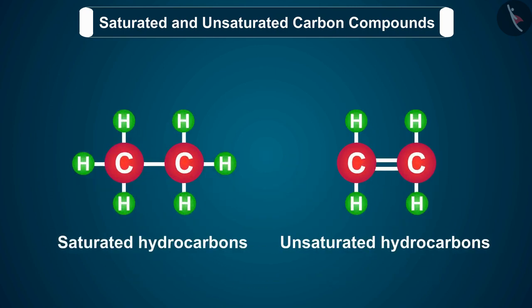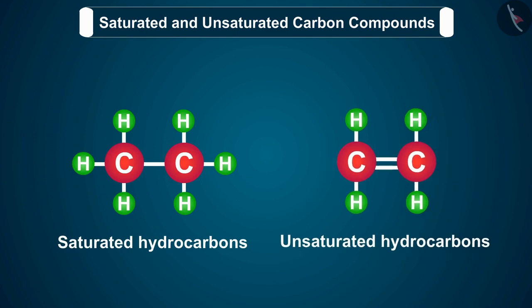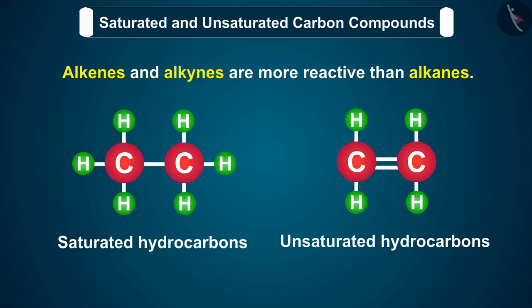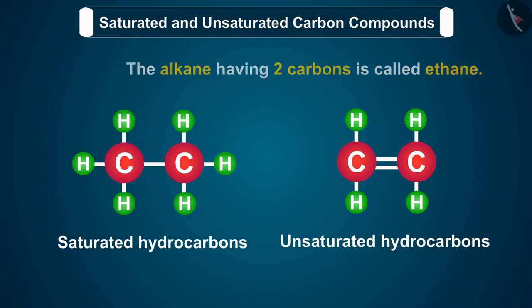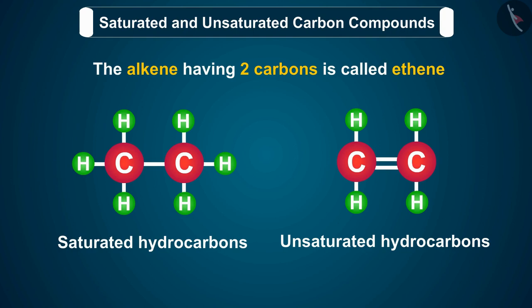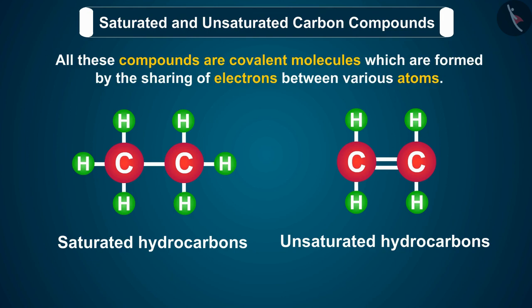You should know that unsaturated hydrocarbons are more reactive as compared to saturated hydrocarbons. In other words, alkenes and alkynes are more reactive than alkanes. The alkane having two carbons is called ethane, and the alkene having two carbons is called ethene. All these compounds are covalent molecules, which are formed by the sharing of electrons between various atoms.